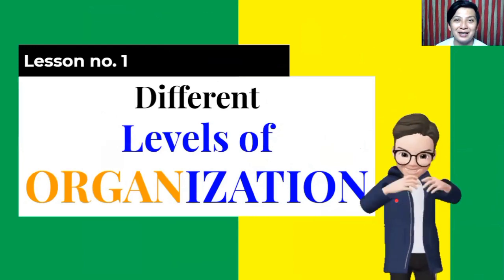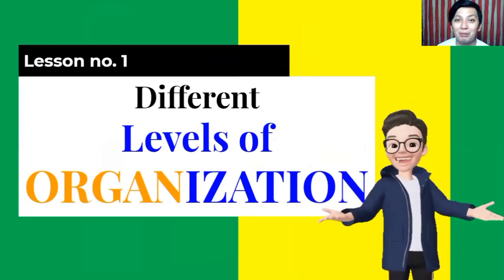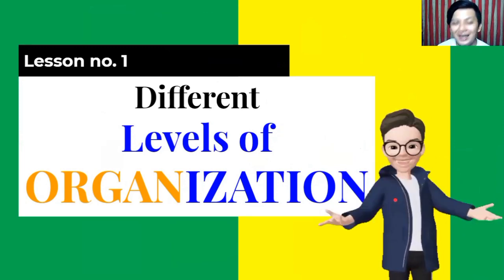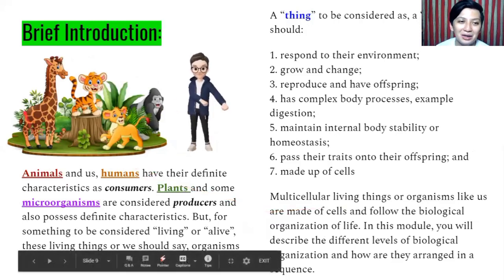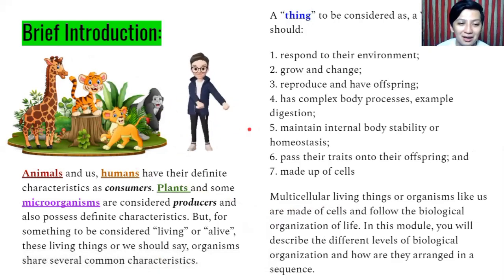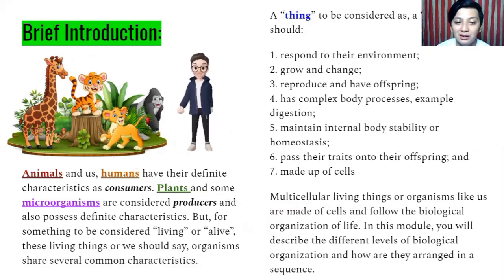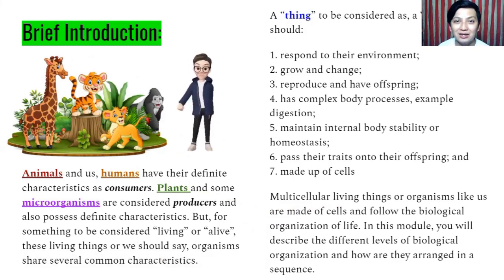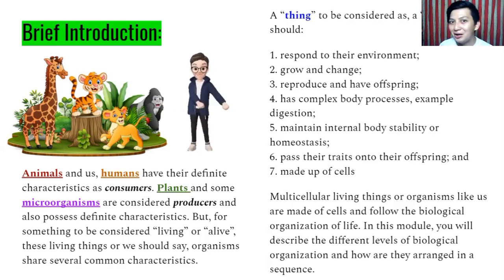For lesson number one, we will tackle the different levels of organization or biological levels of organization. As a brief introduction, you can see here different animals, different plants, and of course human beings. Animals and us, humans, have their definite characteristics as consumers. Plants and some microorganisms are considered producers and also possess definite characteristics. But for something to be considered living or alive, these living things — or organisms — share several common characteristics. There are characteristics or traits that plants, animals, and humans have in common.